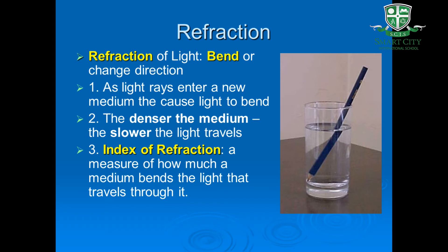So, what is refraction? Refraction happens when light is traveling at an angle and passes from one substance into another. As a result, it bends or changes its direction. The amount of bending when light is refracted depends on the speed of light in both materials. The greater the change in speed, the more the light will be bent as it passes at an angle from one material to the other.